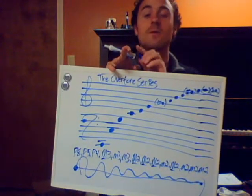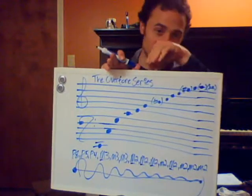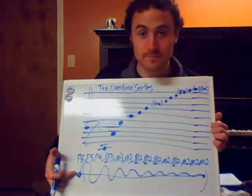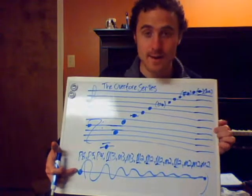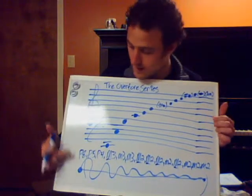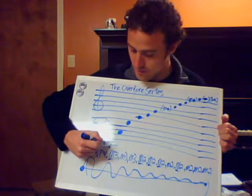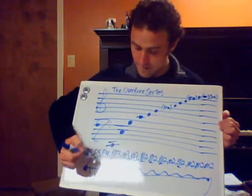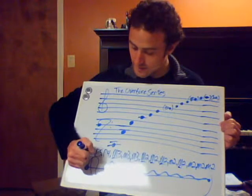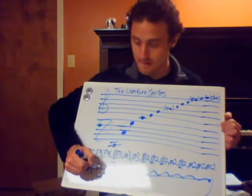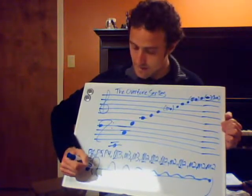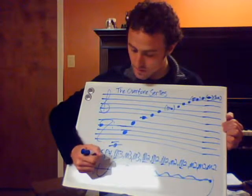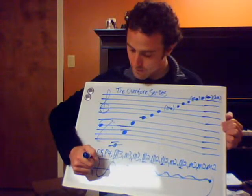As I pointed out in my last video, we have an initial tone — that's what we have right here. This initial tone is divided: it divides into a perfect octave, which is right here, and then it divides into a fifth and a fourth, which are both right there.